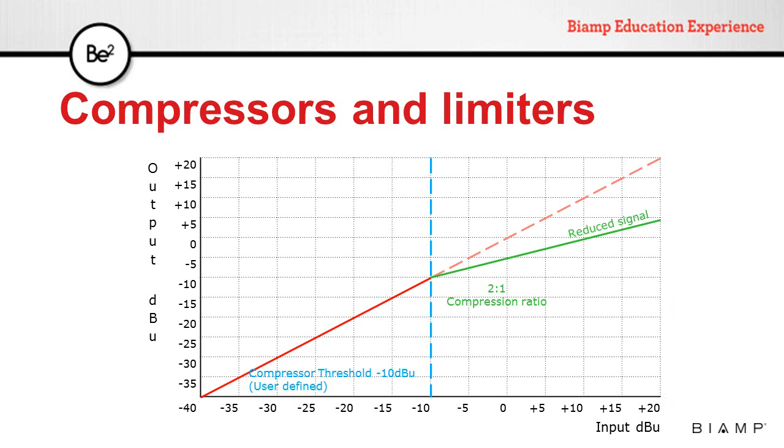A ratio of 2 to 1 means that for every 2 dB above the threshold, the output level will be 1 dB over the threshold. If the input level reaches 0 dB, 10 dB above the threshold, the output will be minus 5 dB, just 5 dB above the threshold.